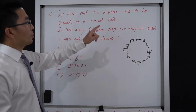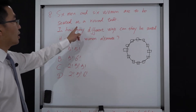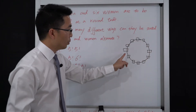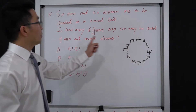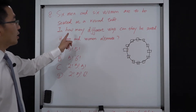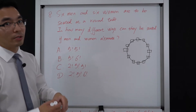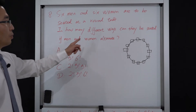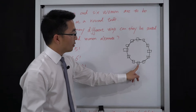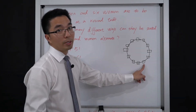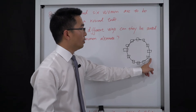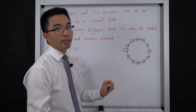Let's go to question 8. Six men and 6 women are to be seated at a round table with 12 seats. In how many different ways can they be seated if men and women alternate? So for example, if one seat is for a man, the next must be a woman — man, woman, man, woman, like that.